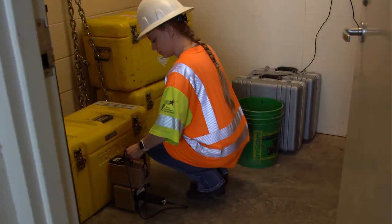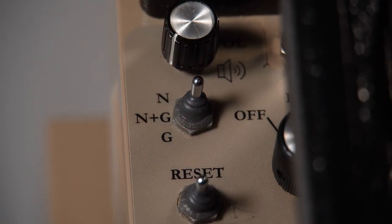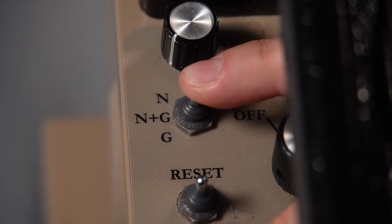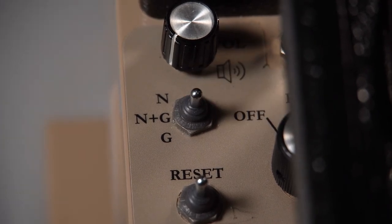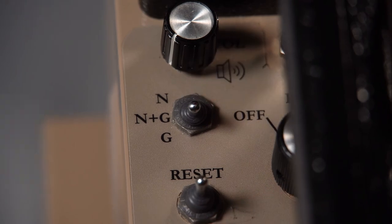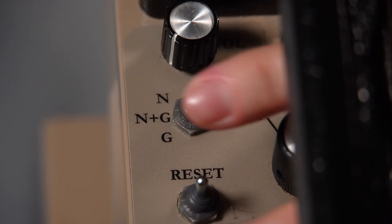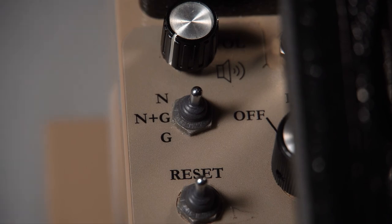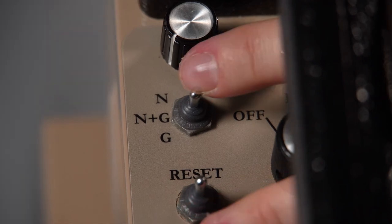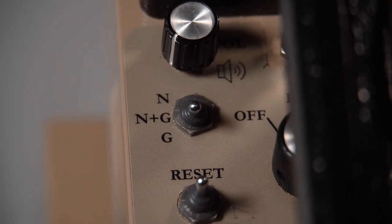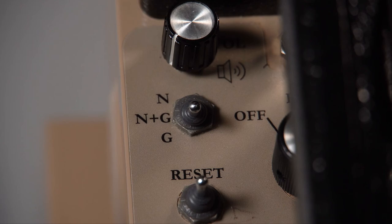Adjust the three-position N, N plus G, and G toggle switch to the desired position. Remember that while in the N position, the 2363 will only display readings from the Priscilla Neutron Detector. The N plus G setting will add the readings from the internal gamma detector and the Priscilla Neutron Detector together. And the G setting will only display readings from the internal gamma detector.